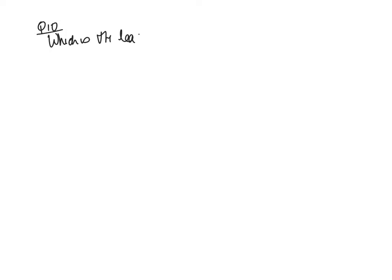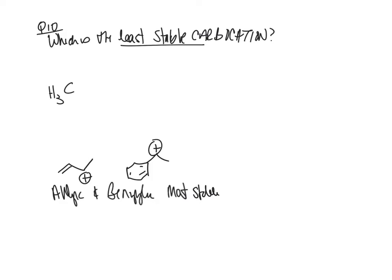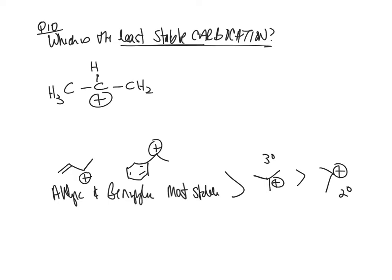Question 10 asked which is the least stable carbocation. The stability order for carbocations is: allylic and benzylic are most stable because they follow the same resonance pattern as free radicals; then tertiary; then secondary. Primary carbocations are not stable. Write down what you know about carbocation stability patterns before looking at your answer choices.